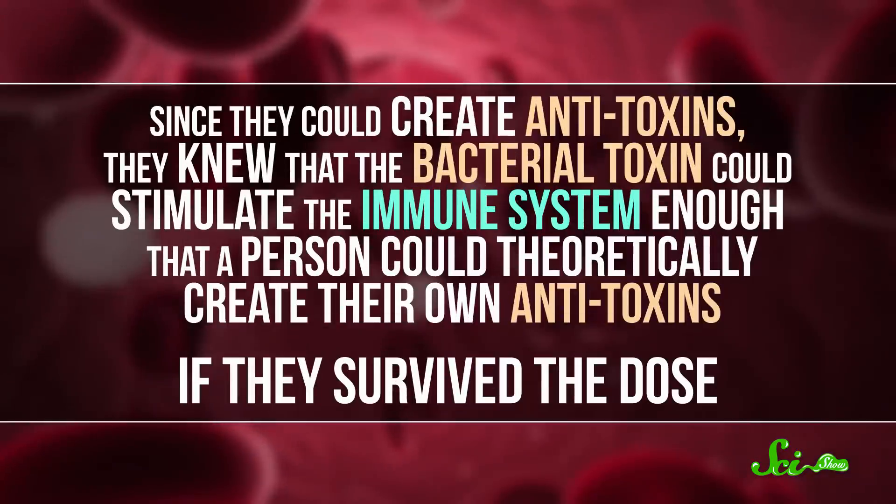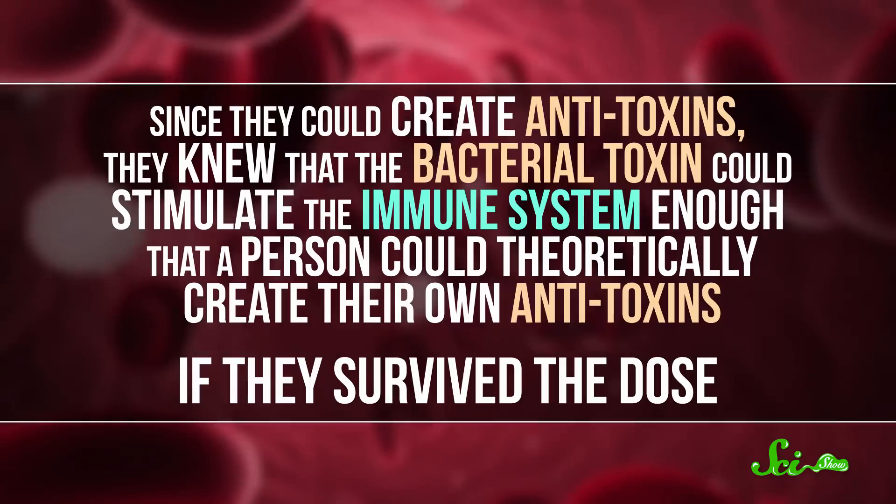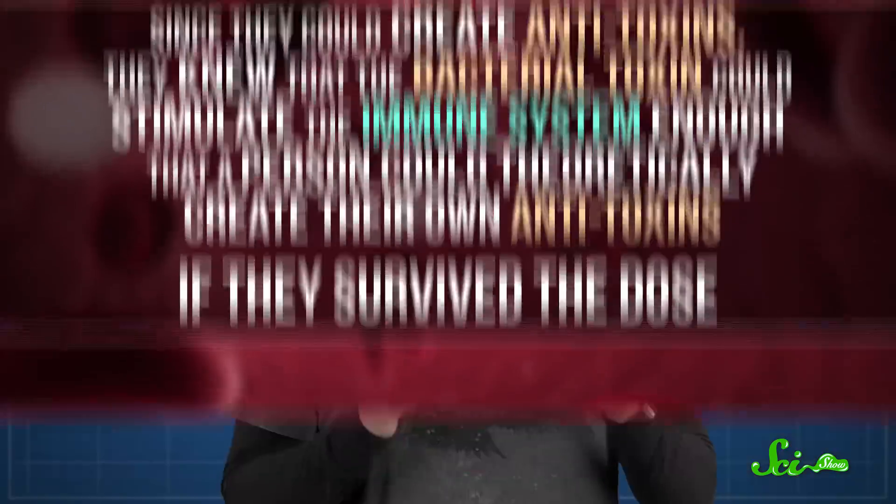So scientists attempted something pretty revolutionary. Since they could create antitoxins, they knew that the bacterial toxin could stimulate the immune system enough that a person could theoretically create their own antitoxins if they survived the dose. So they tried to find a way to inactivate the toxic effects while still retaining the toxin's immune-stimulating abilities. And after getting the perfect mixture of formaldehyde, toxin, and heat, they did it.